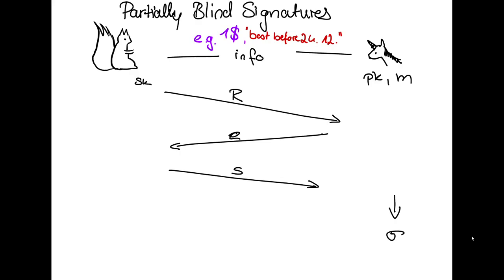The signer has a secret key and the user has the corresponding public key and they interact in order to get a signature on the message on the user's side. So the user wants a signature on his message.